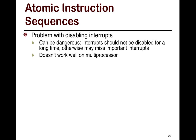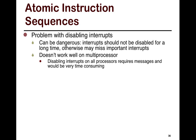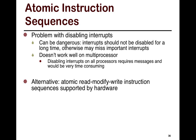If you disable interrupts on one processor but the other one has interrupts enabled, two threads trying to acquire the lock could both succeed. Disabling interrupts across all processors requires broadcast messages — such mechanisms are essentially non-existent on current CPUs and would be very time-consuming, which is why they don't exist.